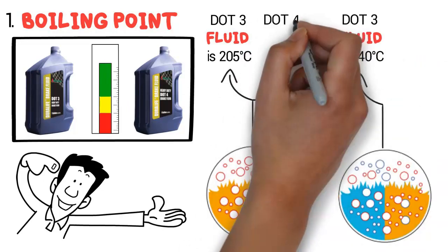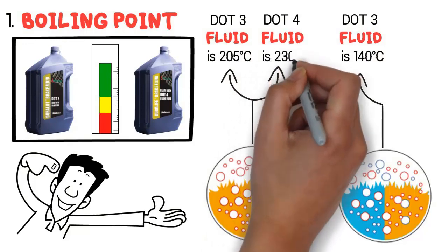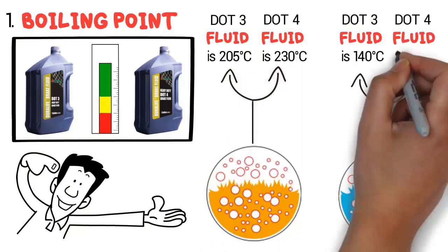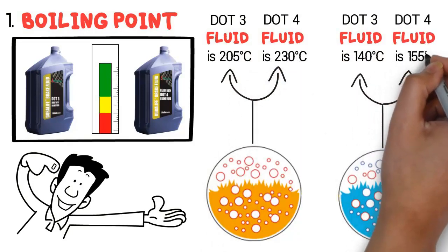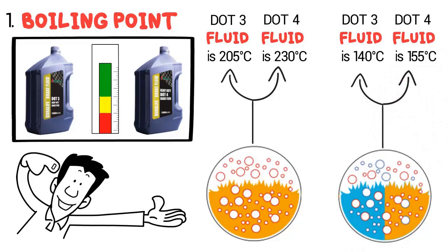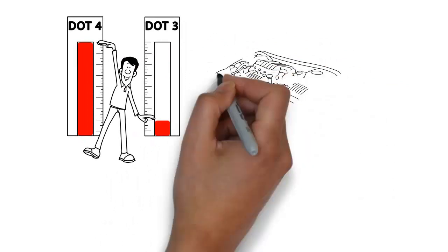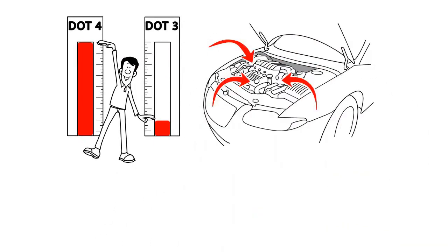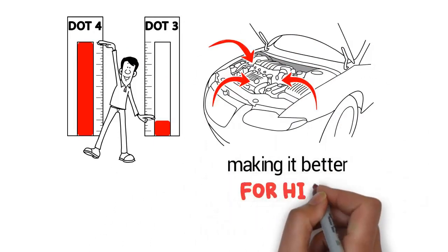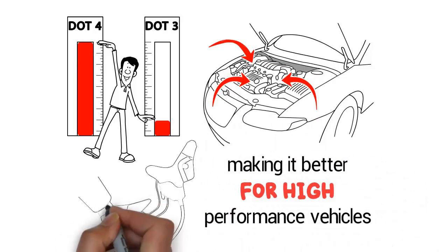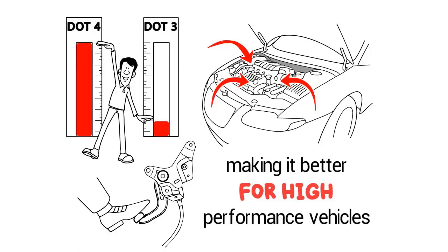The dry boiling point of DOT 4 fluid is 230 degrees Celsius and the wet boiling point is 155 degrees Celsius. The DOT 4 has a higher boiling point for both dry and wet points. This means it can withstand more heat before it starts to break down, making it better for high performance vehicles or when braking under extreme conditions.